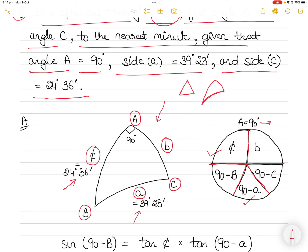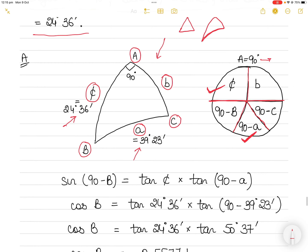Once you have written sides c and b, write the angles opposite to them in the bottom semicircle, prefixed with '90 minus'. Opposite side c write (90 − C), opposite side b write (90 − B), and the remaining element in the center is (90 − A). What you have been given is side c and angle A, so you know (90 − A). Using these two values, find angle B and angle C.